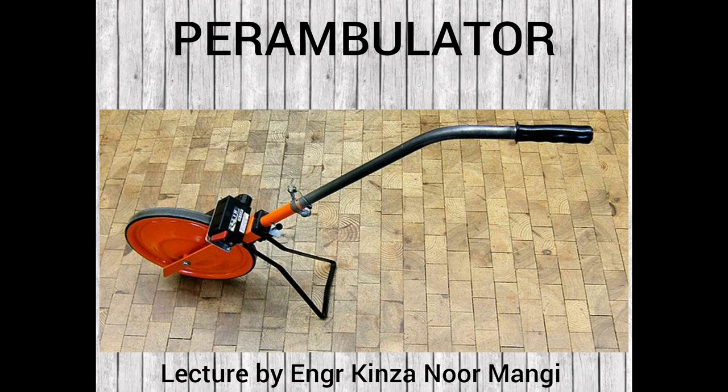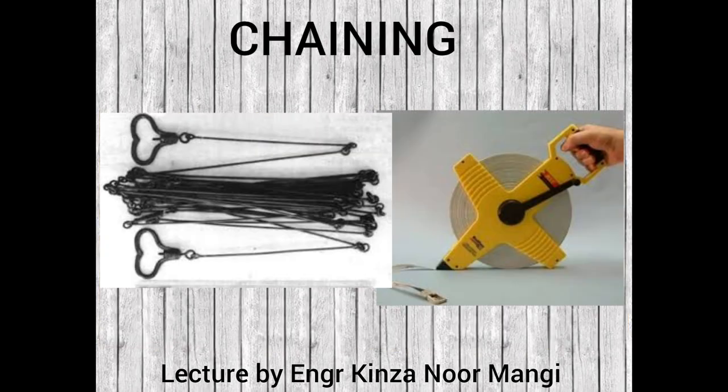Next is the perambulator. It is a wheel with a stand-like instrument, fitted with a fork and handle. The wheel is graduated and shows distance per revolution, and there is a dial which records the number of revolutions, allowing distances to be measured.